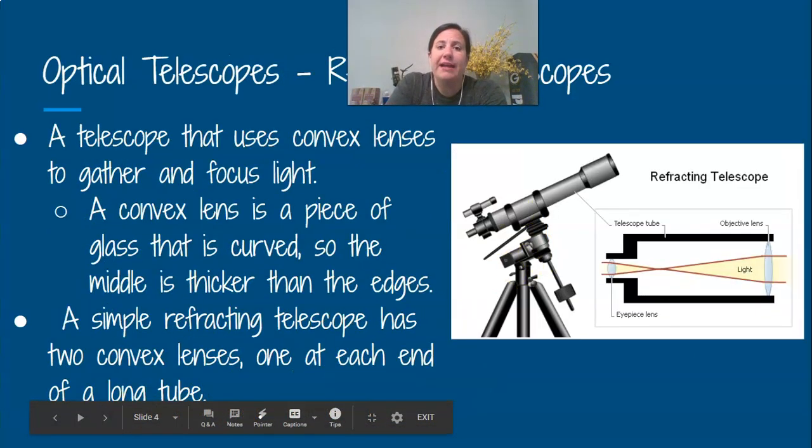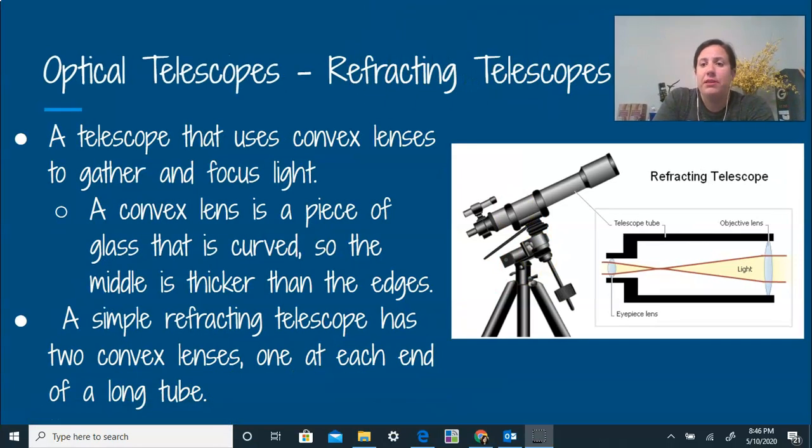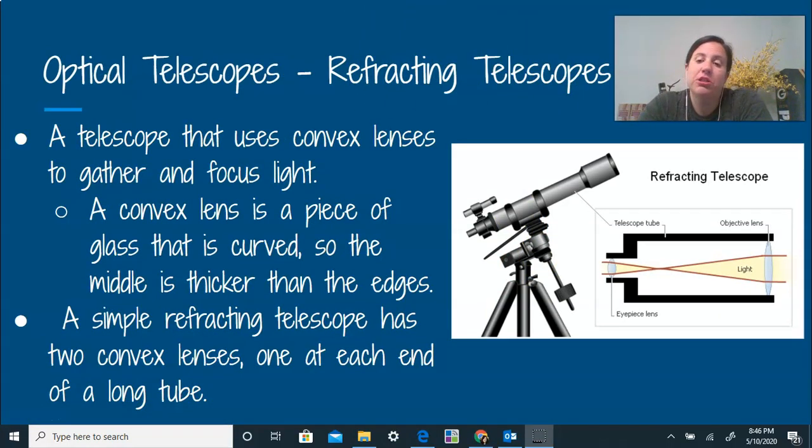You have a refracting telescope and then the other one is a reflecting one. So we're going to talk about a refracting one. So what this does is it's going to use a convex lens. So you can see that it has two lenses. It has an eyepiece lens, which is going to be down here. This is where you would look through. And then it has what we call an objective lens. So it has two lenses and you can see how it's going to focus that light onto the eyepiece lens so that you can actually see it.